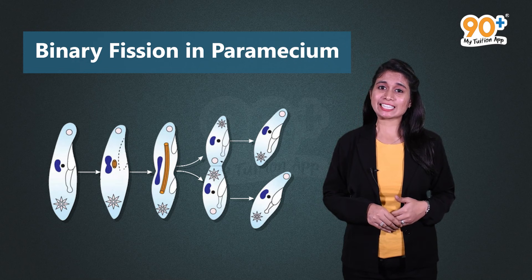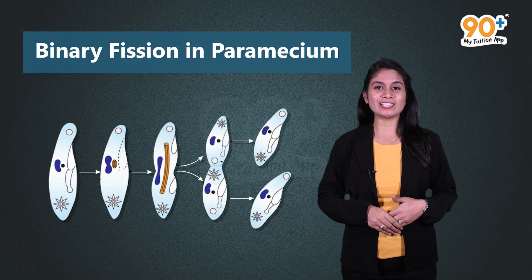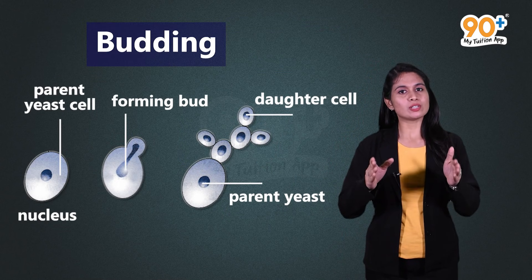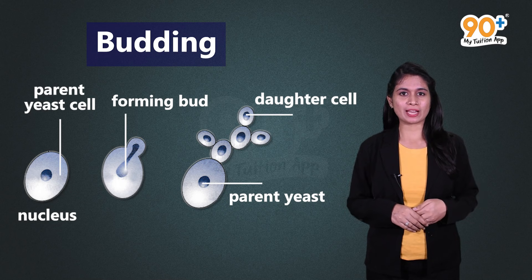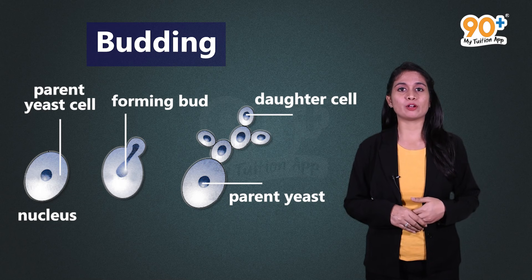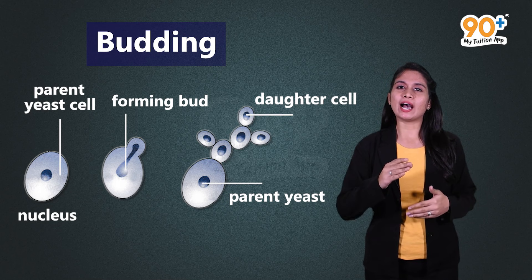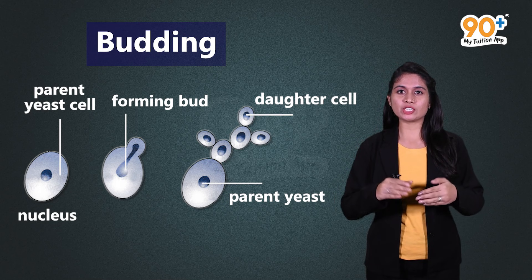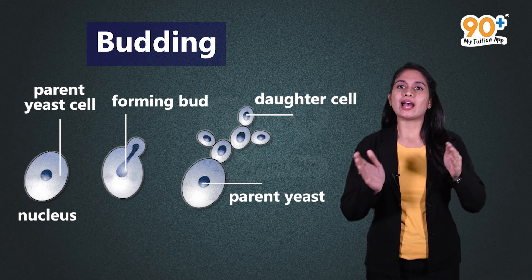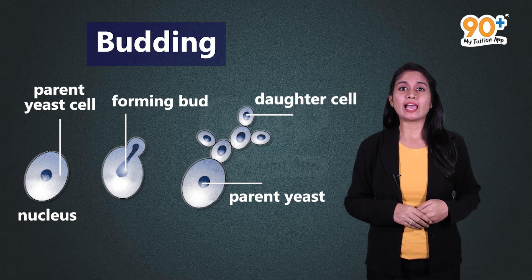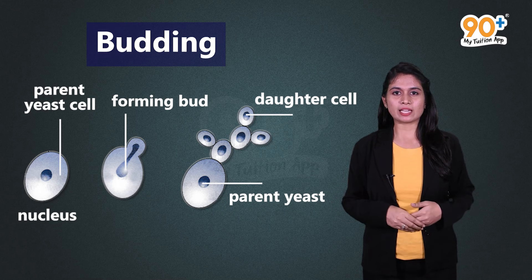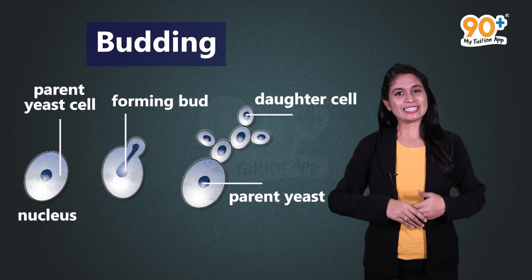The second type of asexual reproduction is budding. In yeast, the cell unequally divides and buds are formed. Initially the buds are attached to the parent cell and eventually get separated from the parent cell to form new yeast cells.